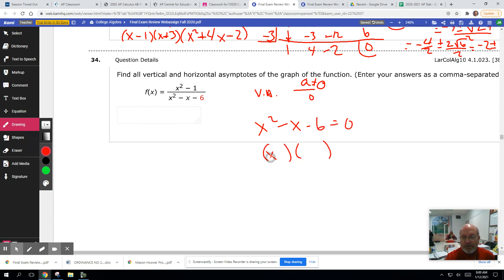So we can factor that to X minus 3 times X plus 2, which tells us X equals 3 and X equals negative 3, or sorry, negative 2, are candidates.